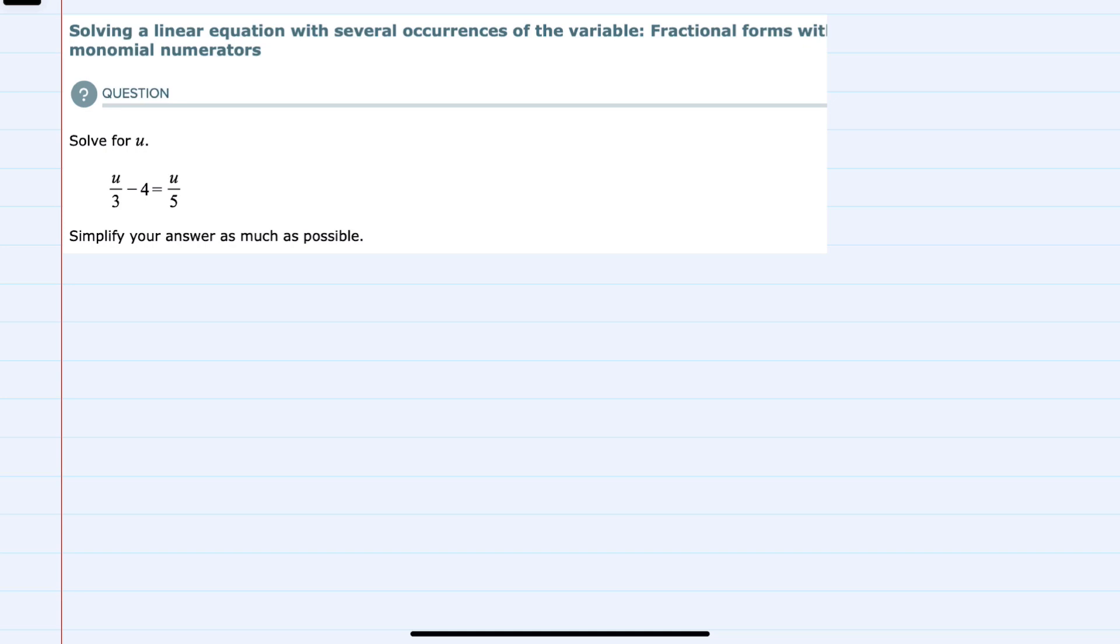I'm first going to rewrite the expression to give a little bit more room. I can see that I have two fractions here. To remove the fractions from an equation, we can do so by multiplying by the lowest common denominator. Our lowest common denominator between the 3 and the 5 is 15.